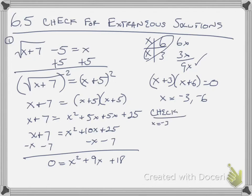Okay, and to check, you plug it back in. Negative 3 plus 7 minus 5 is equal to negative 3. Negative 3 plus 7 becomes 4. The square root of 4 is 2. 2 minus 5 is negative 3. That works.